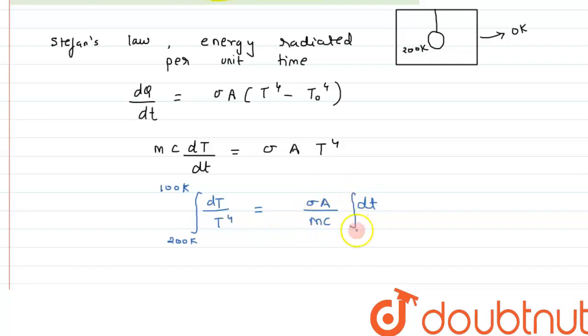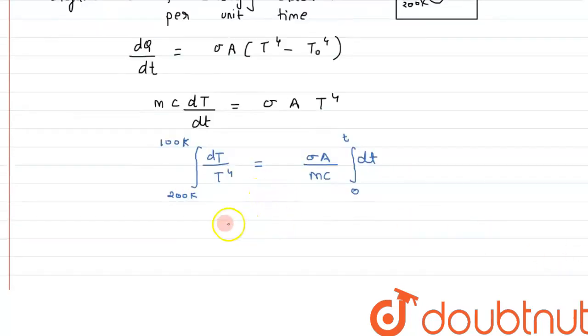That will equal σA divided by mc into dt. These quantities are constant, so we can take them out. When time starts, the temperature was 200 kelvin, and we have to calculate the time at which it becomes 100 kelvin. Let's suppose that time to be t.